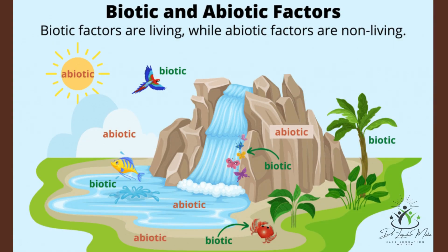Now let's look at the components of an ecosystem. There are two important components: biotic and abiotic. Biotic factors or components are the living components of an ecosystem — the prefix 'bio' means life. These include producers, which are plants; consumers, which are animals; and decomposers, which are organisms that break down dead matter.